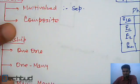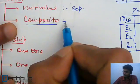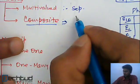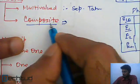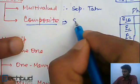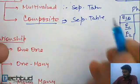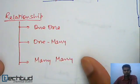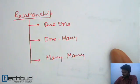For composite attributes: just like an entity has multiple attributes, a composite attribute also has sub-parts. This composite attribute also needs a separate table.